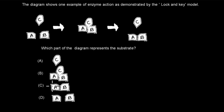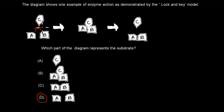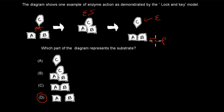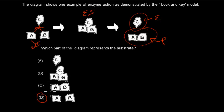The correct answer is D. You might have guessed A, but in this case A is the actual enzyme. Two different substrates come together, forming the enzyme-substrate complex. Then we have an unchanged enzyme and our products. So the substrates are the two molecules that bind to the enzyme, and D correctly identifies them. The enzyme remains unchanged throughout.